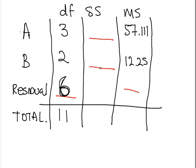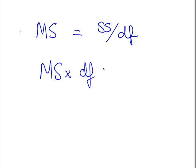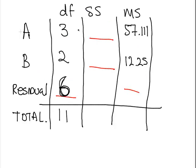Now we can also find out what the sums of squares are, based on the fact that we already know what the mean squared is. In general, the mean squared is the sums of squares divided by degrees of freedom. But if you know what the mean squared is, and you know what degrees of freedom they are, you multiply them out to find the sums of squares. So essentially what we have to do is multiply the two terms that we have, mean squared and degrees of freedom, to get the sums of squares. In this case we multiply 3 by 57.111, and working that out we get 171.33. 2 by 12.25, that's 24.5.